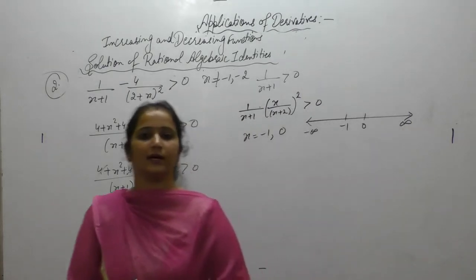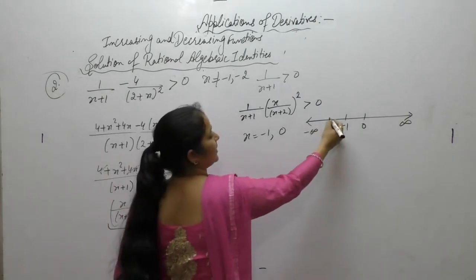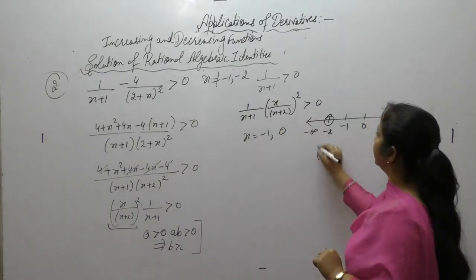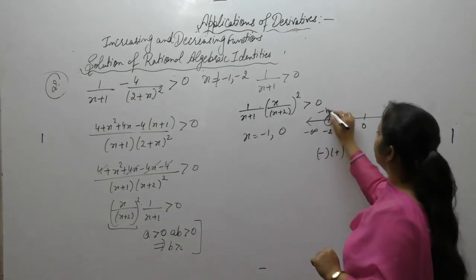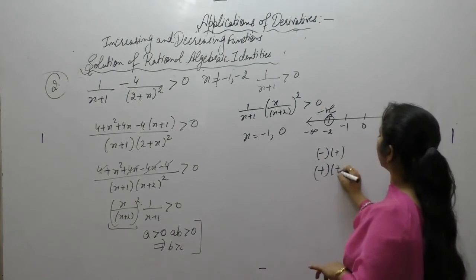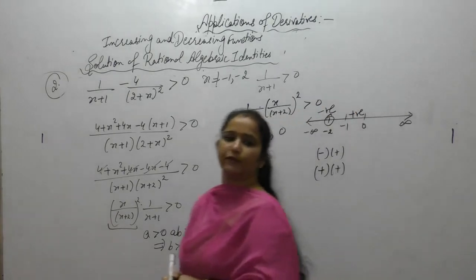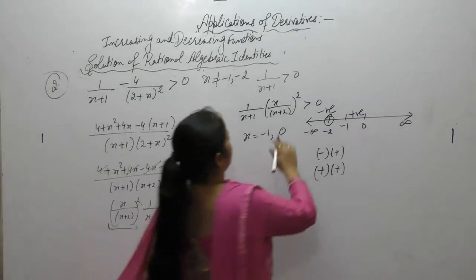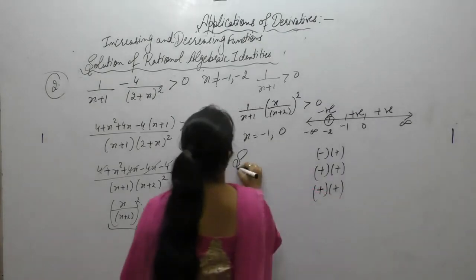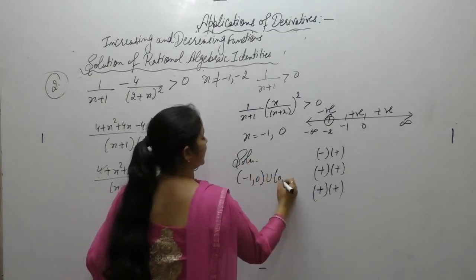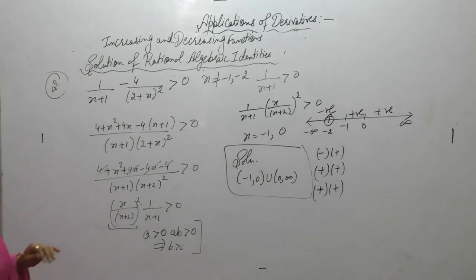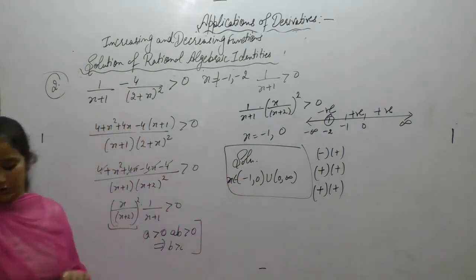The sign is greater than 0, so we check for positive sign. Left of minus 1 (using minus 2): 1/(minus 2 plus 1) is negative; (minus 2)² is positive — so negative overall. Between minus 1 and 0 (say minus 0.5): (x+2)² always positive. From 0 to infinity (say 2): 1/(2+1) positive, whole square always positive. Solution is x ∈ (−1,0) ∪ (0,∞).